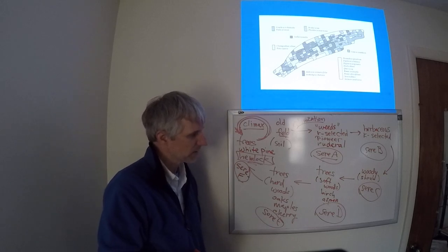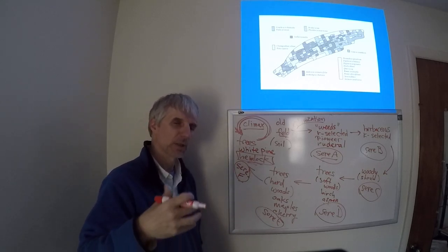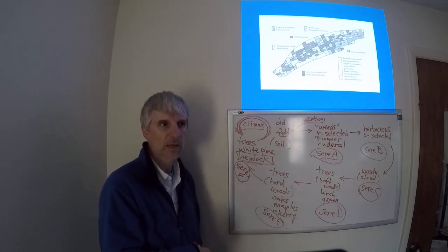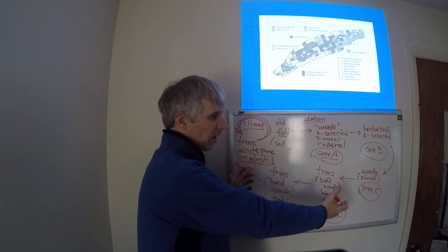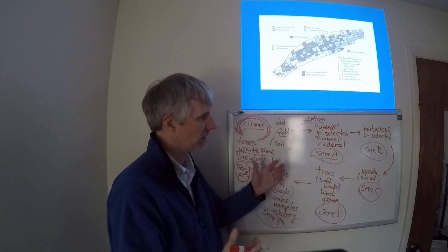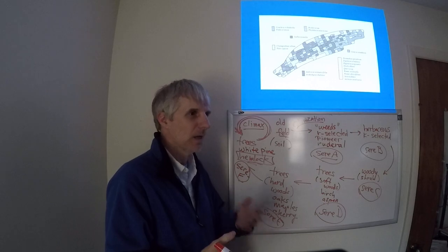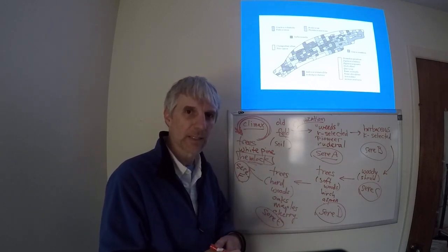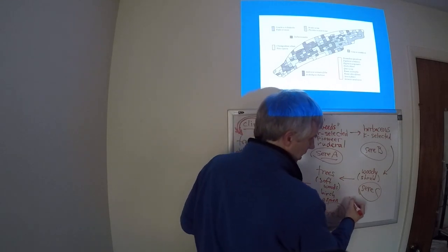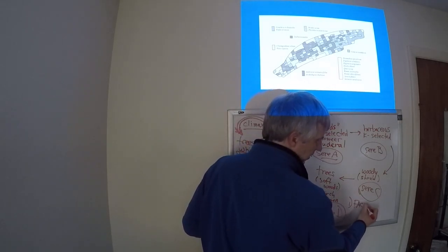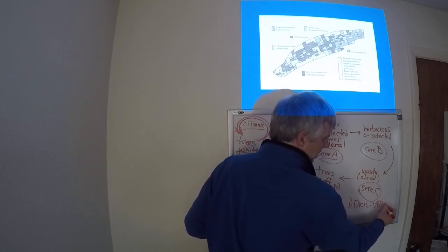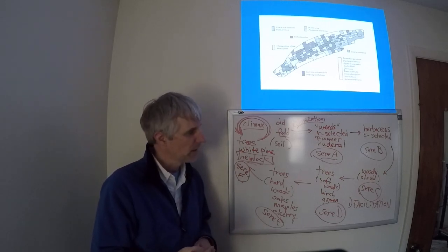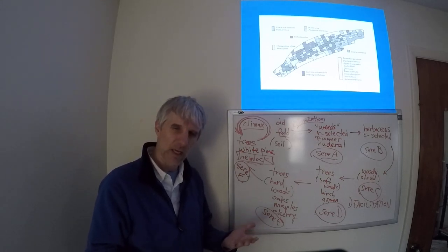So for ecologists, the old field succession model that was well-developed back in the late 1800s, and we've got over 150 years of old field succession data because it's been that long since these fields were abandoned in the late 1800s. We have all this data, but really what that leads us to is a type of succession called facilitation or facilitated succession.